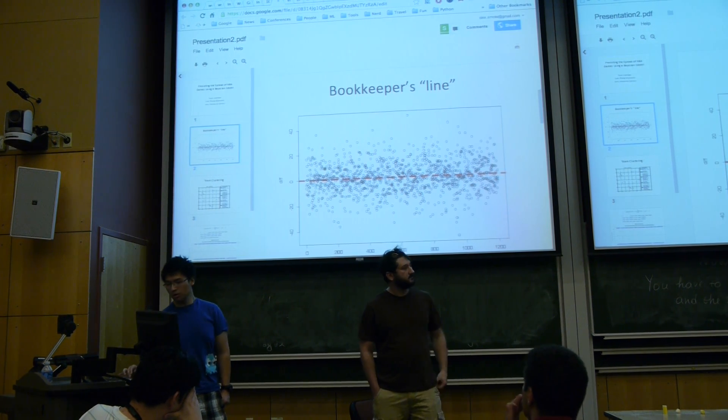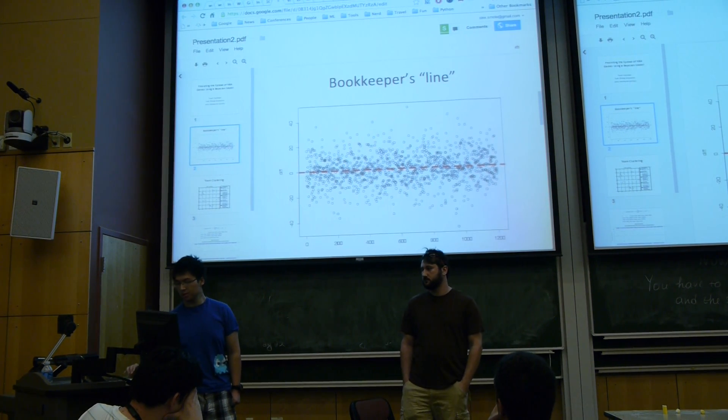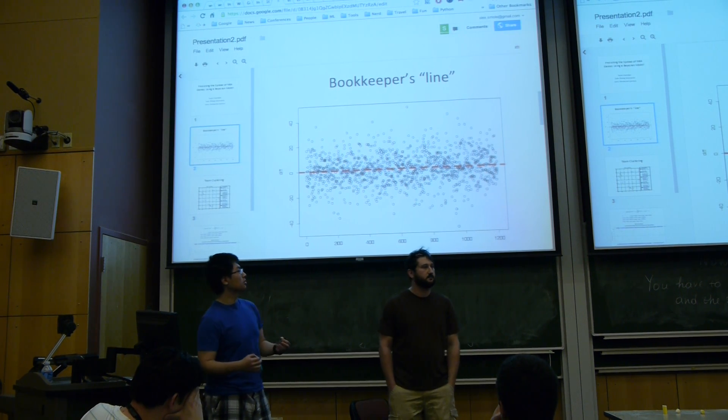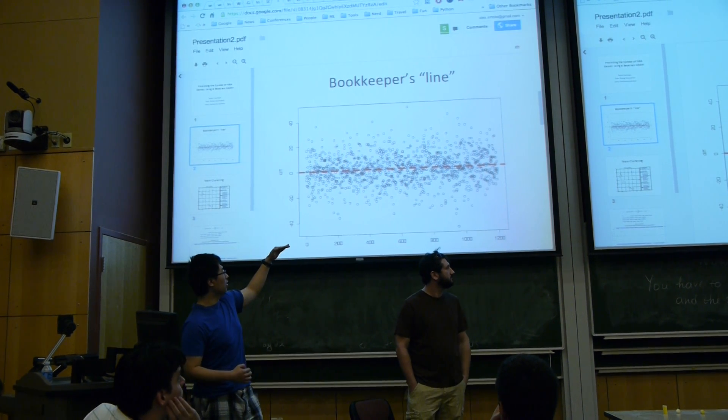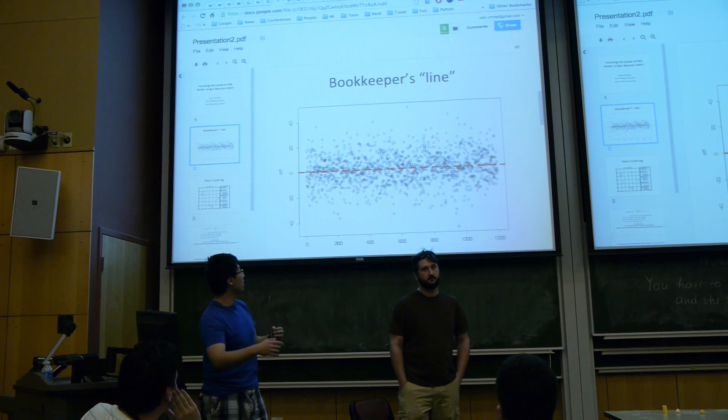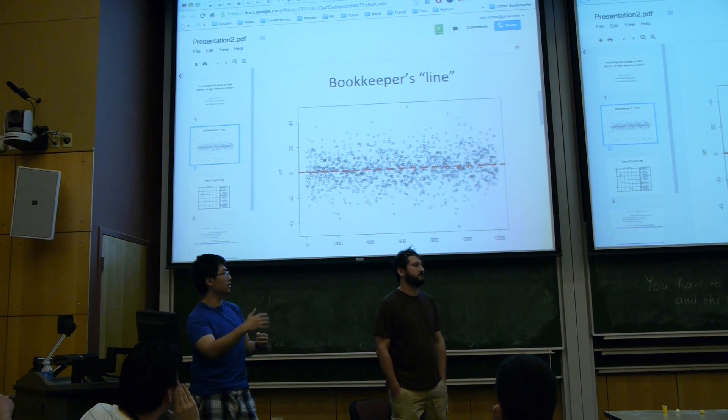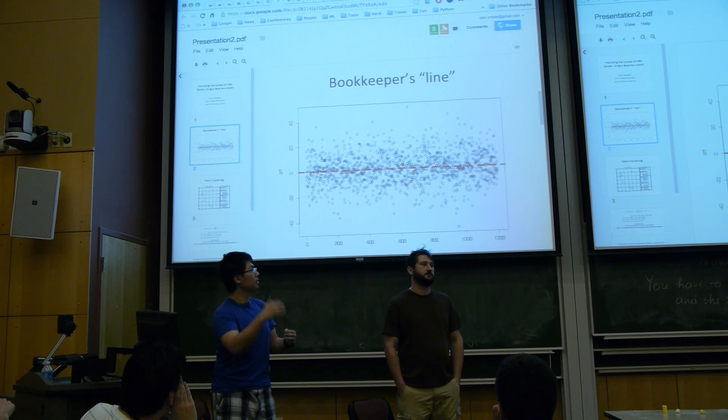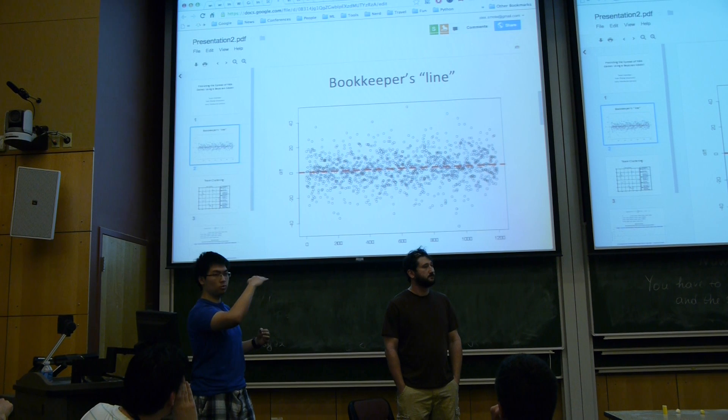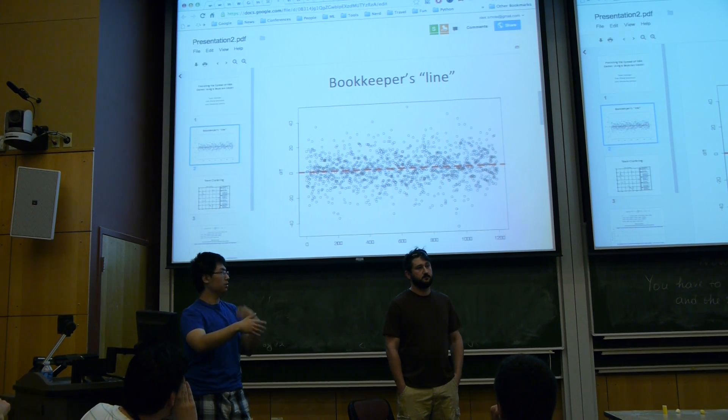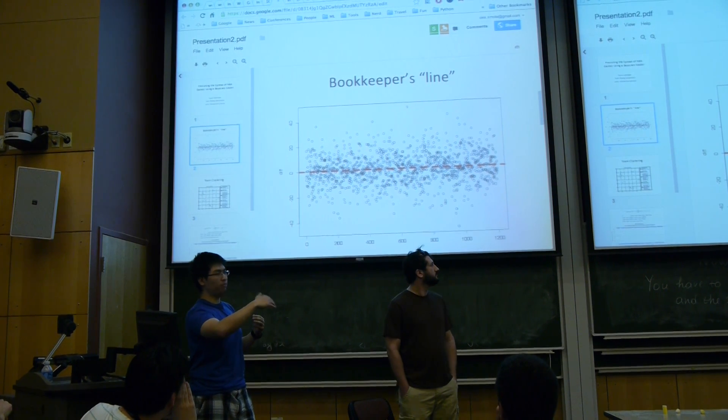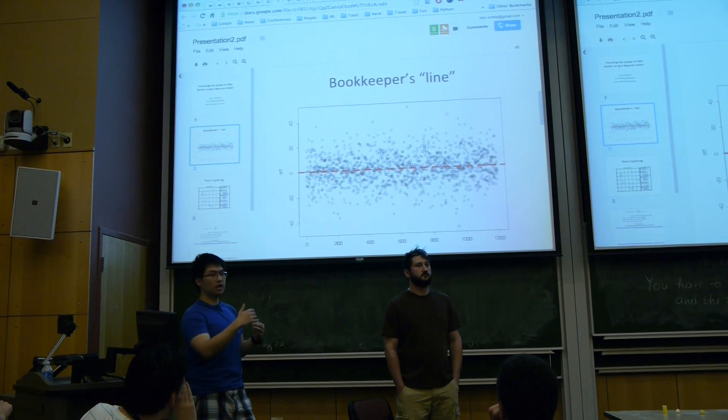So first of all, we look at how the bookkeeper's line actually performs against the actual playoff data. The red line is the baseline of the actual score offset between the two teams in each game. And the dots indicate how the line is set by the bookkeeper. We can see that the bookkeeper is actually not doing a great job predicting the actual score offset. This leaves us a big margin of beating the line.